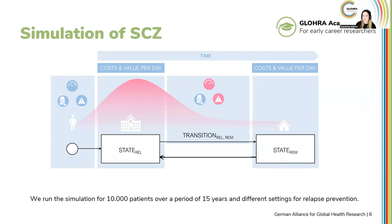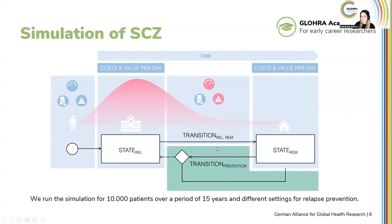10,000 patients over 15 years would be really challenging with real people, obviously. This first setting helps us understand the benchmark — what is the life quality of a patient and what are the costs after those 15 years. What we are interested in is what happens if we have a wonderful solution, for example a wearable, that is able to prevent some of the relapses, so patients don't go directly back to relapse but have a chance to stay longer in remission. We want to focus on how much money we can actually save and how much we can increase the patient's quality of life.